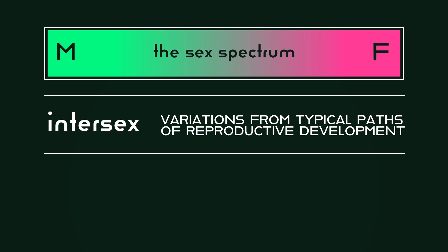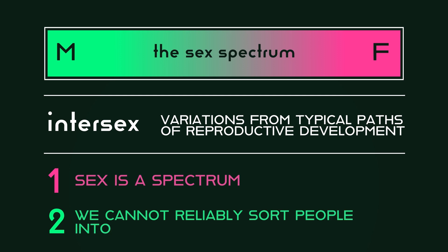These variations are then used to argue that one, sex is a spectrum, and that two, we cannot reliably sort people into male or female categories. Are these claims true?